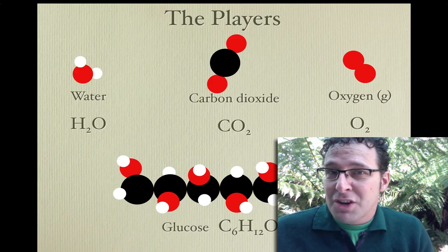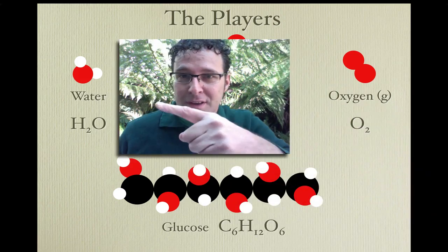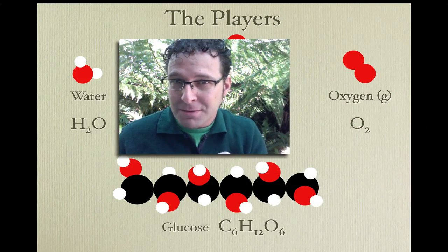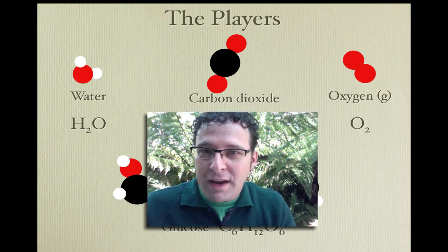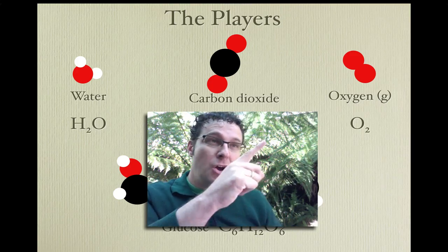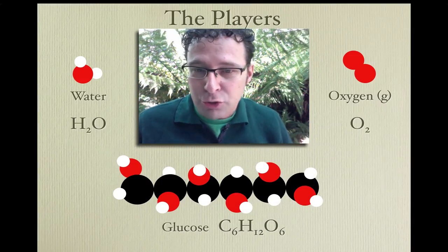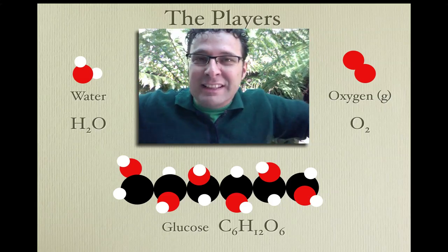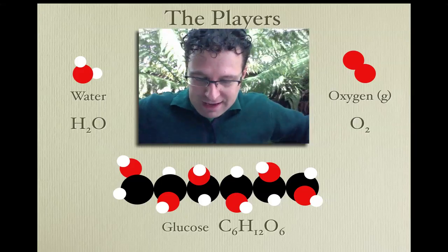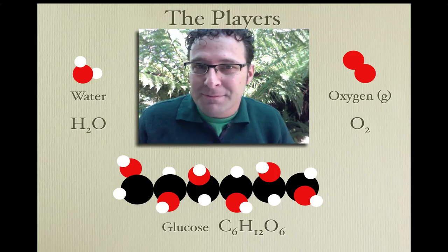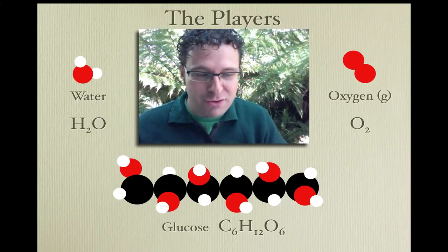Before we launch into this, I want to just refresh our memories and introduce the molecules that I'm referring to here. So water has one oxygen atom, in red, and two hydrogen atoms attached to it. Carbon dioxide has one carbon atom, the black one, and two oxygen atoms. Over here we've got oxygen gas, which is two oxygen atoms. And along the bottom here we have a glucose molecule. Glucose often isn't in a linear arrangement like this - it's often cyclic. But for our purposes, we're going to look at it in this linear sort of molecule with six carbons in black, six oxygens, the red ones, and 12 hydrogens. Its formula is C6H12O6.